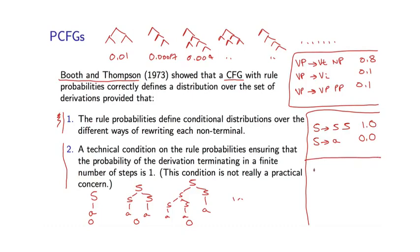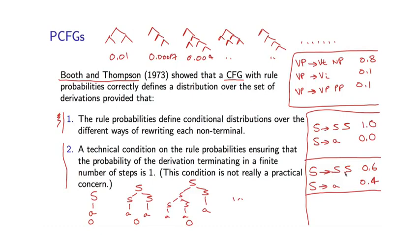A second example, which is a little more surprising: you can show that under certain settings of the rule parameters — say 0.6 for S goes to S S and 0.4 for S goes to A — this grammar also fails to define a well-formed distribution over trees. The sum of probabilities for the set of finite-sized trees actually sums to less than 1 in this case. Intuitively, the grammar is splitting too quickly and has probability less than 1 of actually producing a finite-length parse tree. In practice this is never really a practical concern, but it's just worth having at the back of your mind.